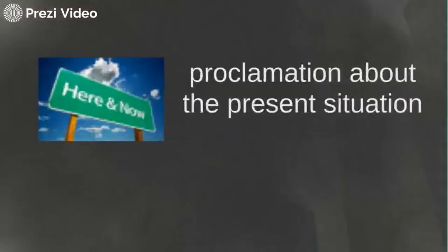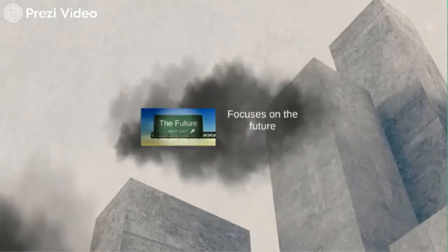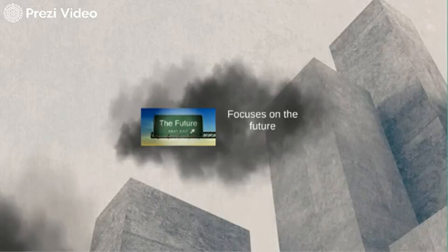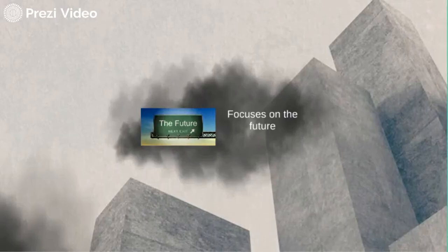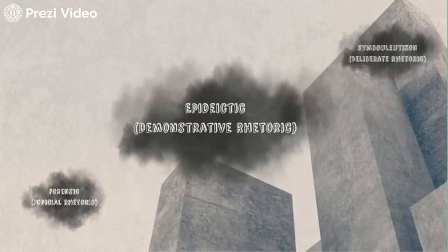Epidectic or demonstrative rhetoric makes a proclamation about the present situation, as in wedding speeches. But the way to accomplish change is through deliberative rhetoric. Unlike rhetoric focused on the past or the present, deliberative rhetoric focuses on the future. It's the rhetoric of politicians debating a new law by imagining what effect it might have — like when Ronald Reagan warned that the introduction of Medicare would lead to a socialist future spent telling our children and our children's children what it was once like in America when they were free. But it's also the rhetoric of activists urging change, such as Martin Luther King Jr.'s dream that children will one day live in a nation where they will not be judged by the color of their skin, but by the content of their character. In both cases, the speakers present their audience with a possible future and try to enlist their help in avoiding or achieving it.